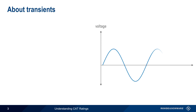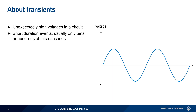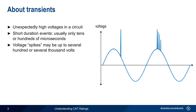AC mains voltage is normally very sinusoidal, with consistent peak and RMS values. Transients are short duration deviations from normal voltage levels. They're usually only tens or hundreds of microseconds long, but during this time voltage can spike up to several hundred or several thousand volts.